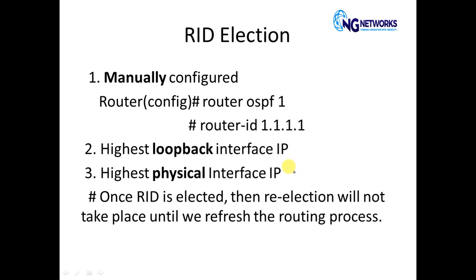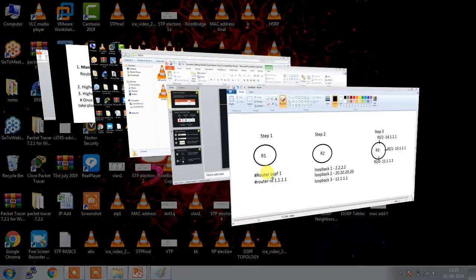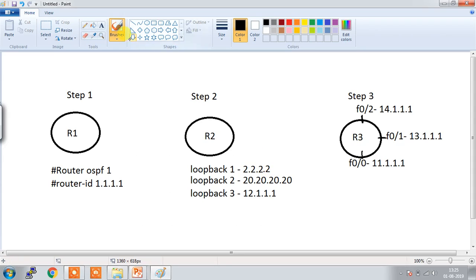Let's see this with the help of an example. In the first case, the router ID is elected manually as 1.1.1.1. Now this router is not going to consider any other criteria, and the router ID will be 1.1.1.1.